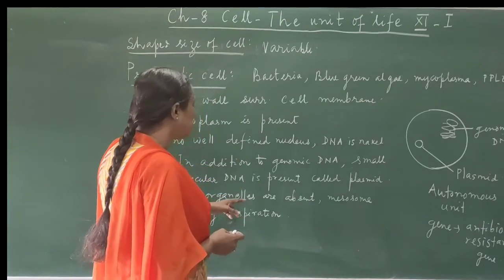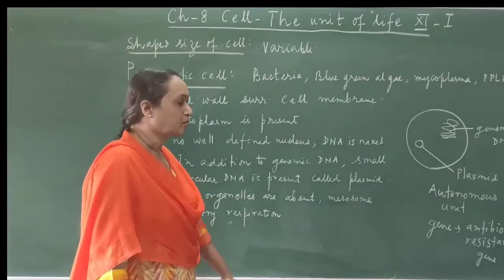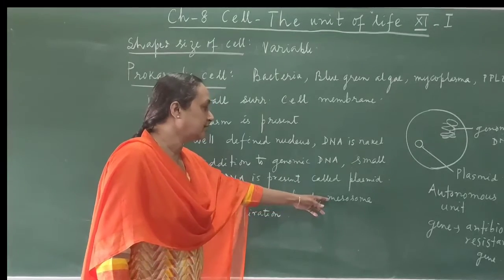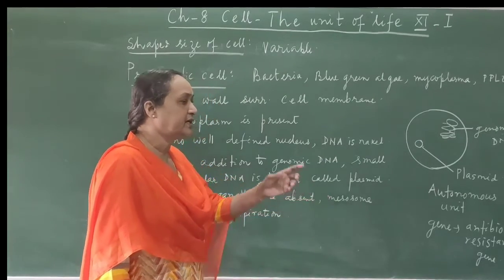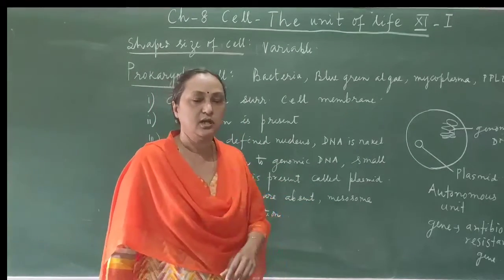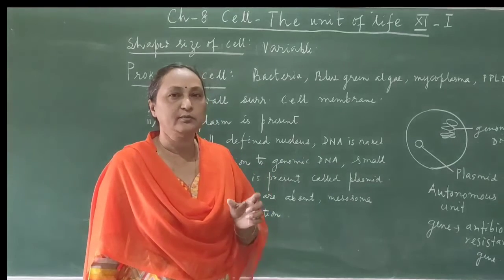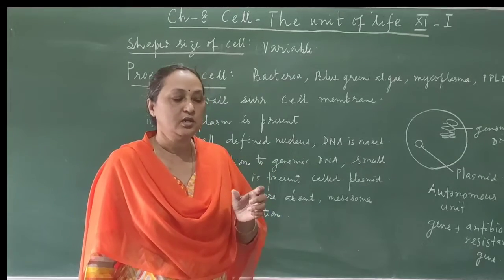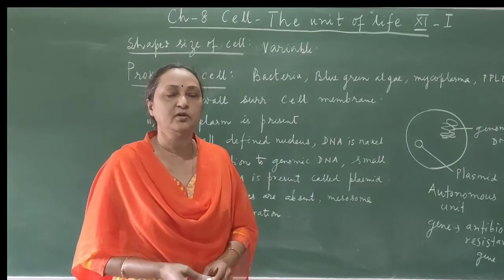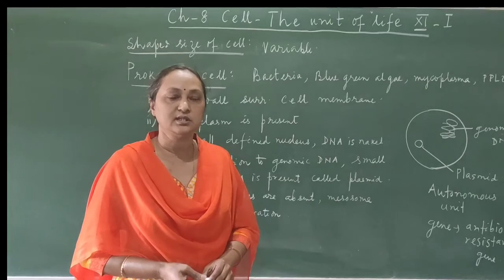Another point is that all cell organelles are missing in prokaryotic cells. In the absence of cell organelles, the plasma membrane makes some folds, and these structures are called mesosomes. The mesosome is responsible for all metabolic activities of the cell.